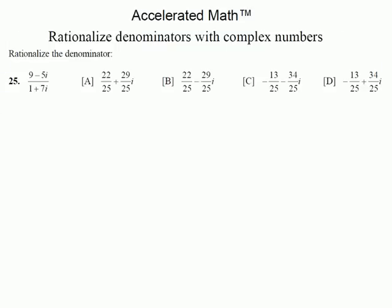We're going to talk about rationalizing denominators with complex numbers. There are some complicated aspects to this. The main thing is having an imaginary number — i represents the square root of negative 1 — but having an i in the denominator is non-standard for math. Getting the i out of the denominator is what we call rationalizing the denominator.